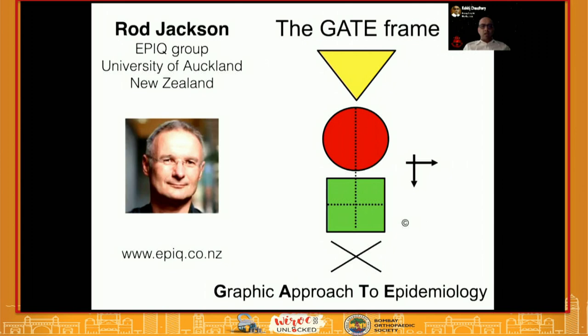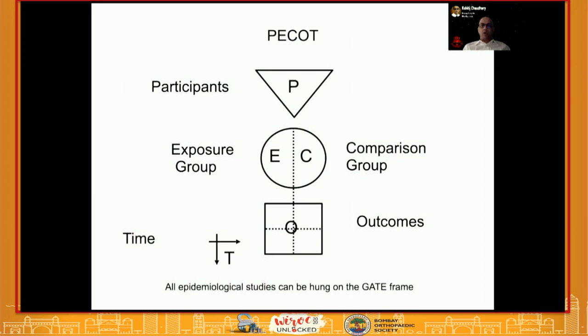You can draw an angle, a circle, a square, and a cross at the edge of the paper you are reading, fill out these areas, and use a mnemonic to identify and critically appraise a paper. It starts with PICOT, very similar to PICO: P is for Participants, E is for Exposure group, C is for Comparison, O is for Outcomes, and T is for the Time frame of the study. All epidemiological studies can be hung on the GATE framework.